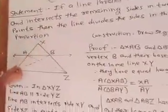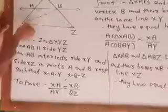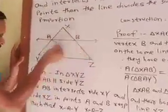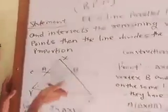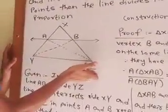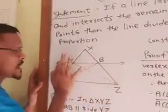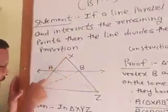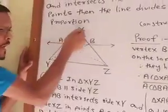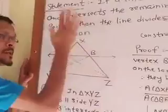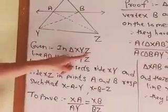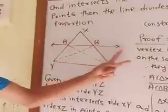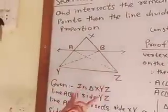That statement is given in the examination. So you draw the figure: Triangle XYZ. This is the construction. In triangle XYZ, line AB is parallel to side YZ.